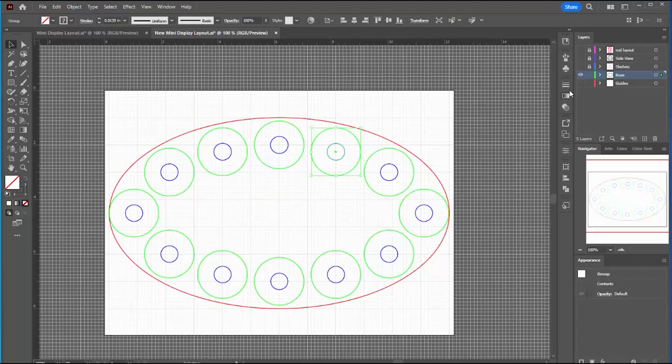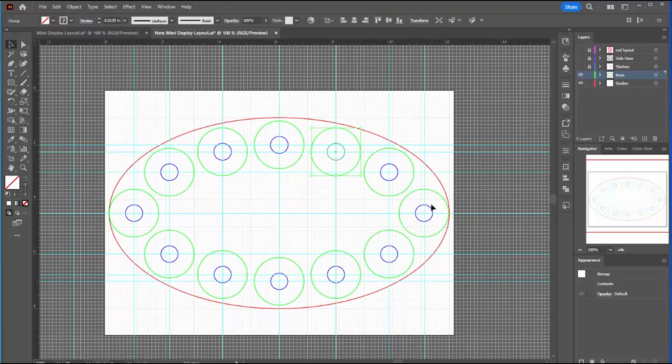When it was a circle, it was easy to lay out the posts using the rotation tool, but the oval is a lot more complicated than that. I ended up just putting down some guidelines and centering the circles at the intersections of those guides.